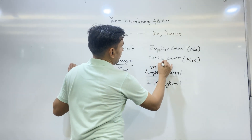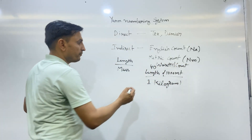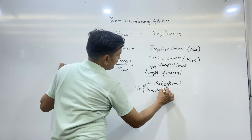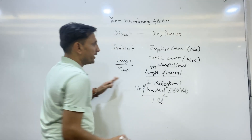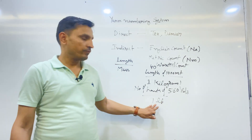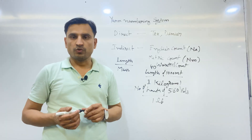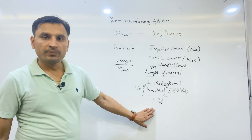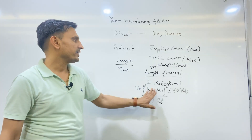Another indirect count is the worsted count. In worsted count we calculate the number of hanks of 560 yards in 1 pound weight of yarn. In English count we used hanks of 840 yards, but in worsted count the hank length is 560 yards, though the weight remains fixed at 1 pound. This is also an indirect system where the weight is fixed and the length varies depending upon the coarseness and fineness of the yarn.